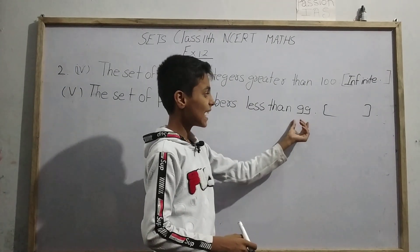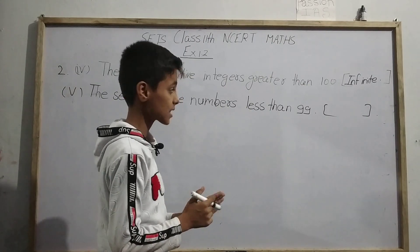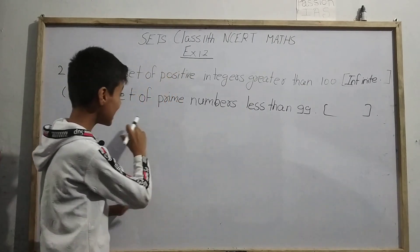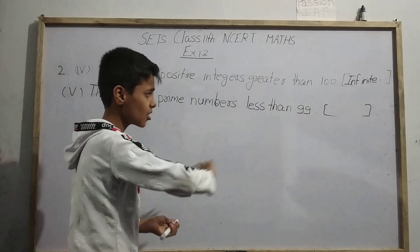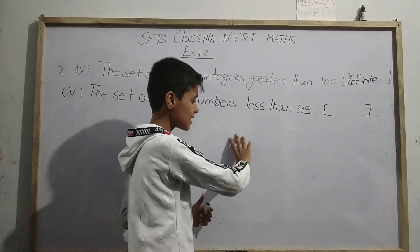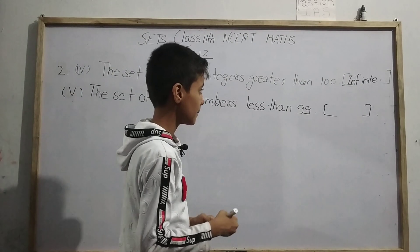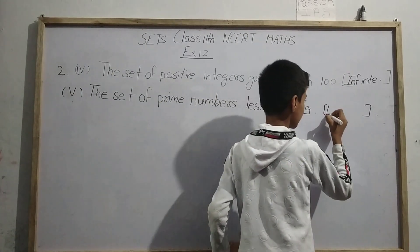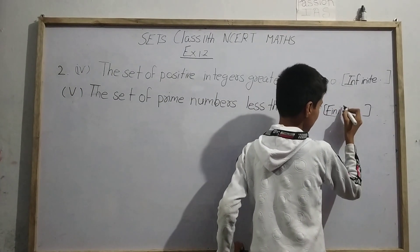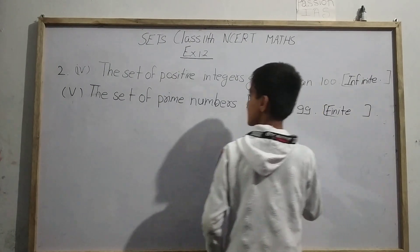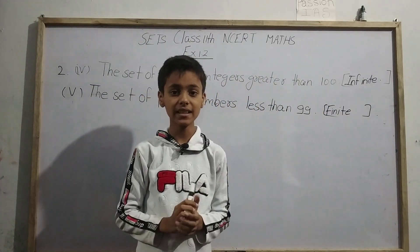Here the end point is given — prime numbers can go only up to 99, with the largest being 97. By this conclusion, the fifth set is a finite set. And by this, our question number two is finished. So this was my today's topic. Thank you.